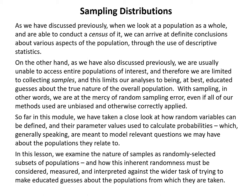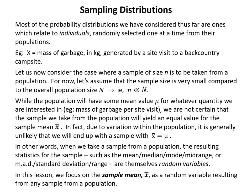So far in this module we have looked at how random variables can be defined and their parameter values used to calculate probabilities, which model relevant questions about the populations they relate to. In this lesson we examine the nature of samples as randomly selected subsets of populations and how this inherent randomness must be considered, measured, and interpreted against the wider task of making educated guesses about the populations from which they are taken. Most probability distributions considered thus far relate to individuals randomly selected one at a time from their populations.